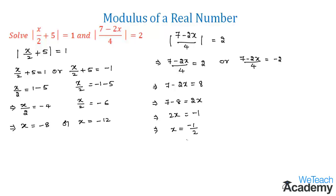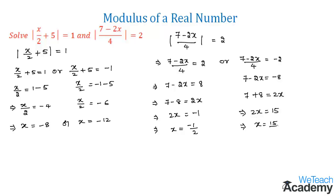For the case (7 - 2x)/4 = -2: cross multiplying gives 7 - 2x = -8. Transferring terms, we get 7 + 8 = 2x, so 2x = 15, and therefore x = 15/2.